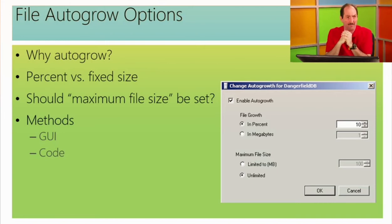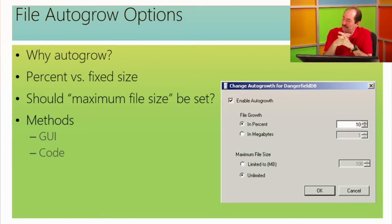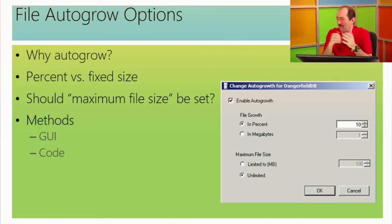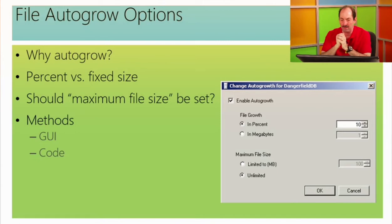Let's take a look at auto-grow options. On a file-by-file basis we can set up auto-grow. Some DBAs have strong feelings about whether this is appropriate. For a small workload, just let it auto-grow — but if you do, make sure the auto-grow percentage is large enough so it won't happen frequently, and use percentage rather than fixed size if you're going to use auto-grow.